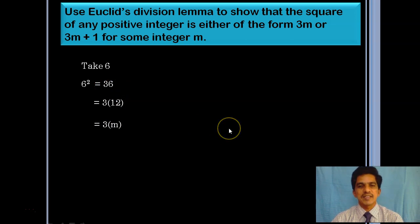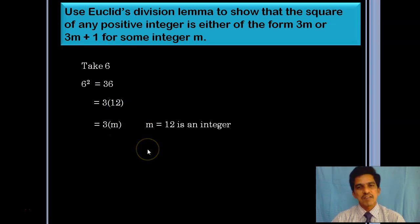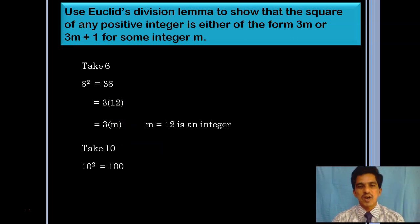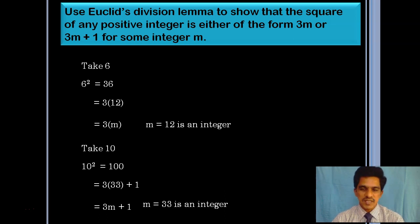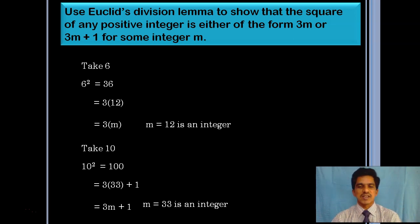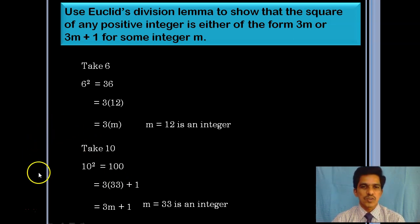Let us take one more case: the number 10. 10 squared is 100. We can write 100 as 3 times 33 plus 1, since 3 times 33 is 99, and 99 plus 1 is 100. So 100 is of the form 3m plus 1, where m is equal to 33. You can take any number — 12, 15, 9, 100 — and square it. When you divide the square by 3, the remainder will be either 0 or 1.